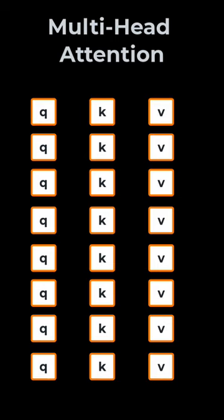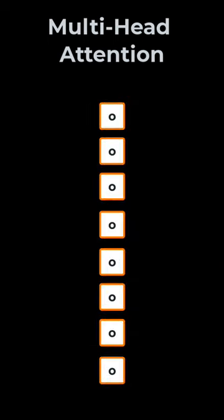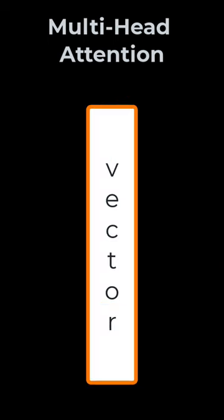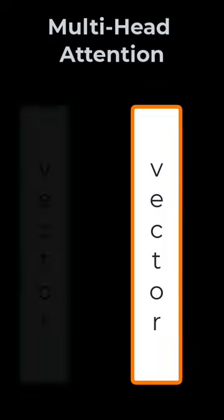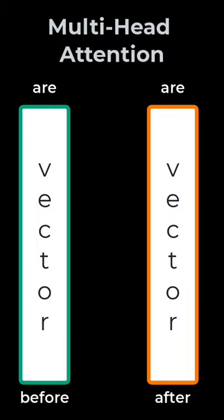We split each of these into eight parts. The query and key are used to generate eight attention matrices, which are then used to generate eight output vectors. We concatenate the vectors to get a single vector that corresponds to the same word as before, but now this new vector actually better understands the context of the word.